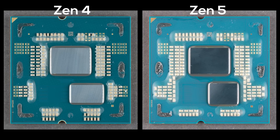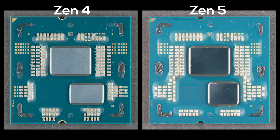In comparison, Zen 4 and Zen 5 look very similar, but there are some differences that are visible even to the naked eye. The most obvious one is the shape of the CCD. While the Zen 4 CCD has a rectangular shape, Zen 5 looks almost square. We can also spot a few more capacitors on the PCB. Interestingly, even though the CCDs have different shapes, they are almost exactly the same size — Zen 4 clocks in at 69.435 mm², and Zen 5 at 69.973 mm². I'd call that margin of error.